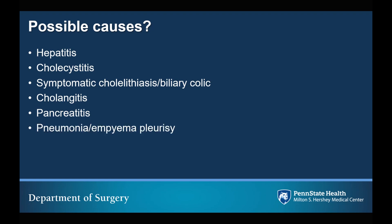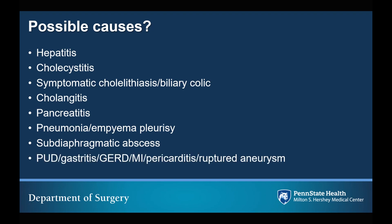A little less commonly, you can have pneumonia or empyema pleurisy causing right upper quadrant abdominal pain. Subdiaphragmatic abscesses can be a cause, as well as peptic ulcer disease, gastritis, GERD, myocardial infarction, pericarditis, or ruptured aneurysm.